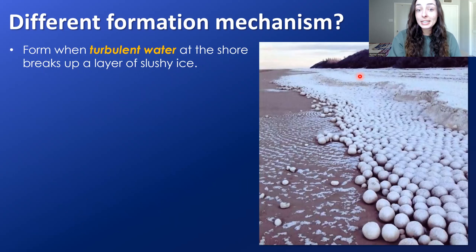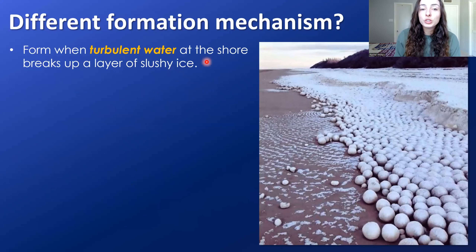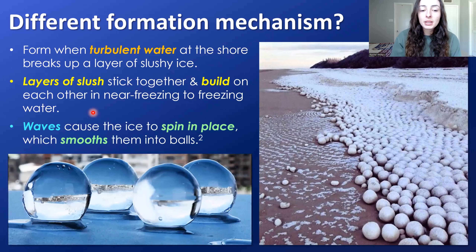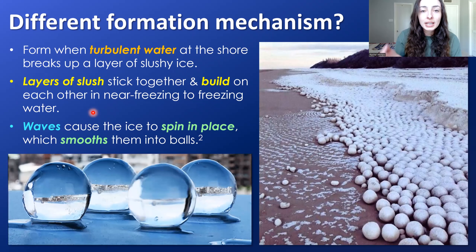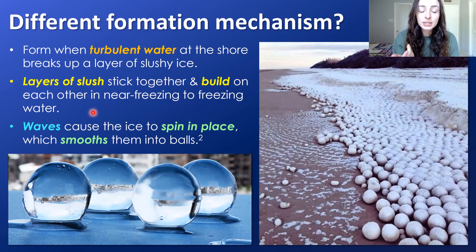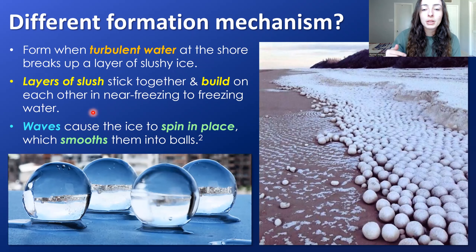A CNN article suggested a slightly different formation mechanism. They suggest these ice balls form when turbulent water at the shore breaks up a layer of slushy ice — so far relatively the same — and then layers of slush stick together and build on each other in near-freezing to freezing water. However, they suggest the waves cause the ice to spin in place, which smooths them into balls, rather than swashing the balls back and forth. Both mechanisms are possible.